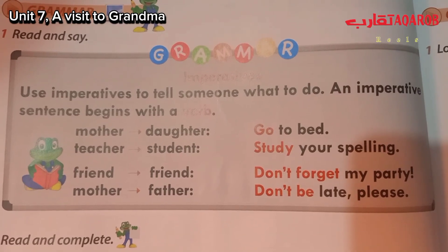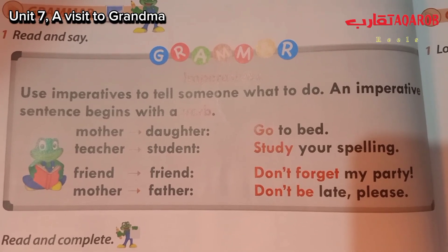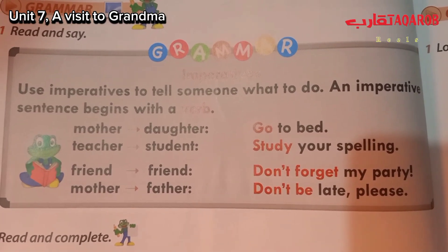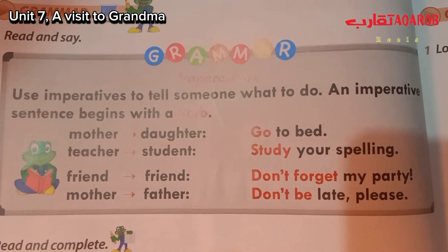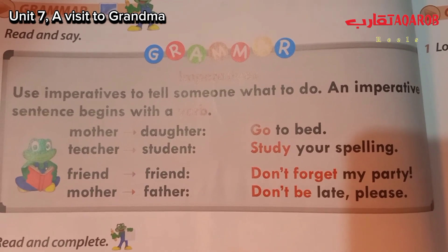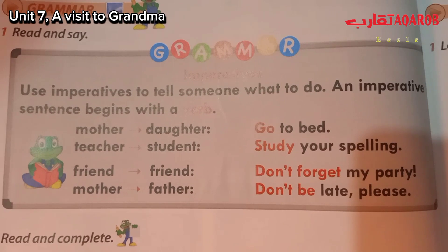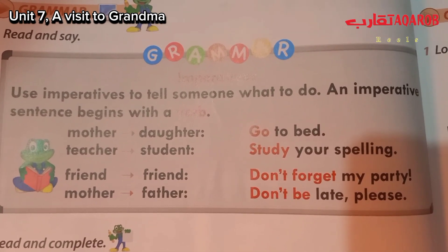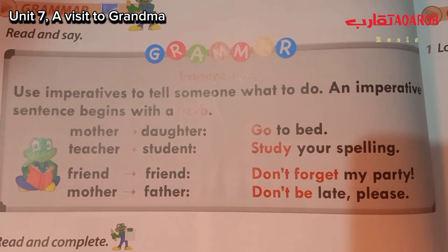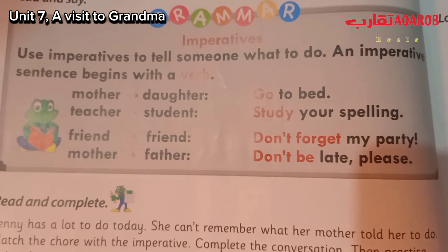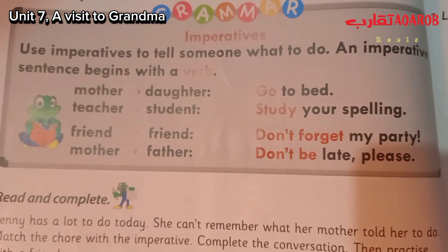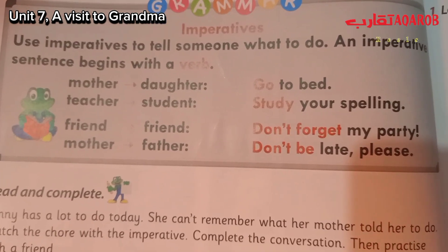Okay, my students. Here we use imperatives to tell someone what to do, and a part of the sentence always begins with a verb. An imperative form of a verb is used to say an order. For example, 'Stop the machine.' Here the verb 'stop' is an imperative verb. Here we have four examples. The first one is 'Go to bed.'